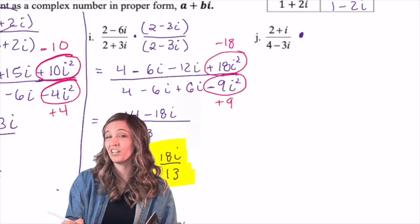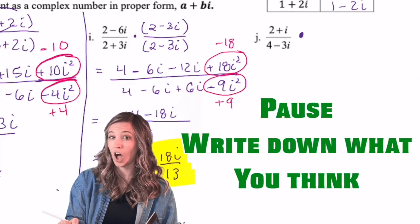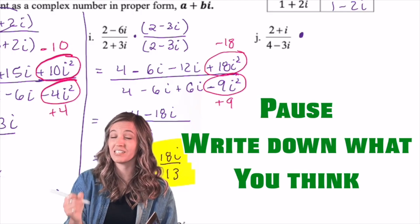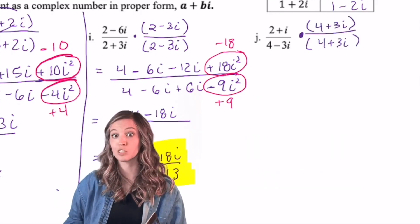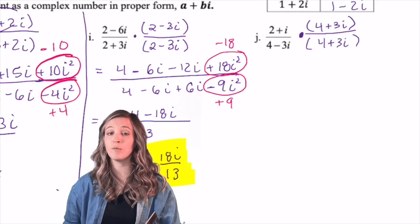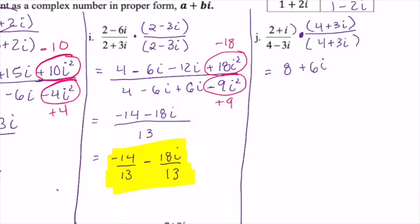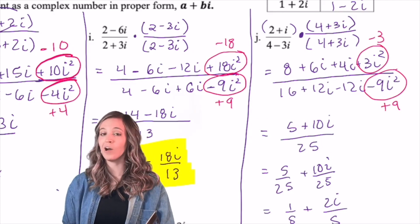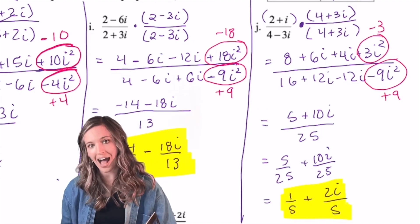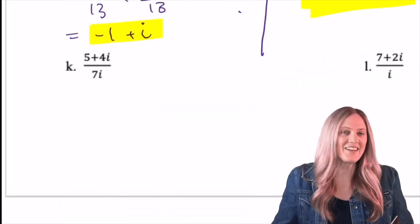All right, looking at j, what complex conjugate do I need to multiply by? Always look at the denominator, because it's the denominator we're trying to make real. If you've got a conjugate of 4 + 3i, you're spot on. Now write it as a creative form of 1 and get going. My final answer simplified down to 1/5 + 2i/5.